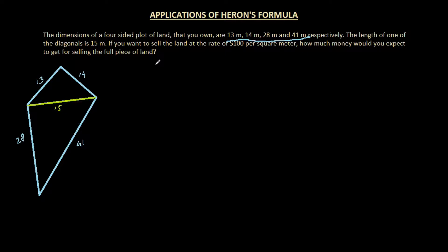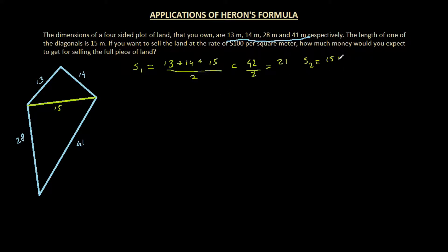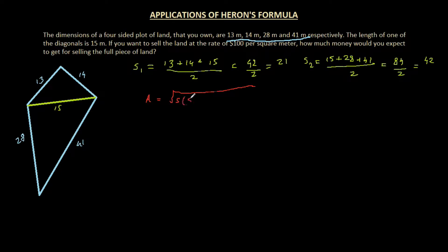For triangle one, the semi-perimeter S1 is (13 + 14 + 15) divided by 2, which equals 42 divided by 2, giving 21. For triangle two, S2 is (15 + 28 + 41) divided by 2, which equals 84 divided by 2, giving 42. Once we have the semi-perimeters, we apply Heron's formula — the square root of S times (S minus A) times (S minus B) times (S minus C) — to both triangles.